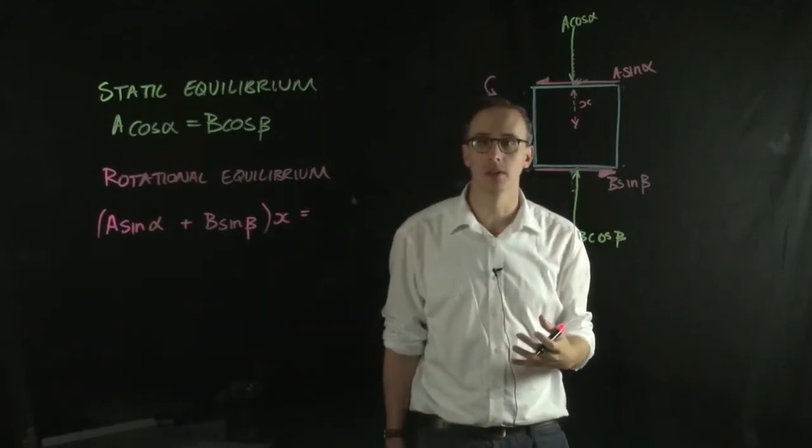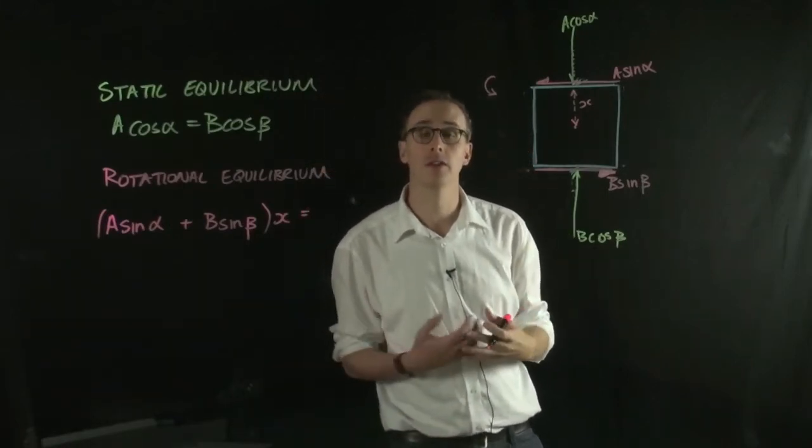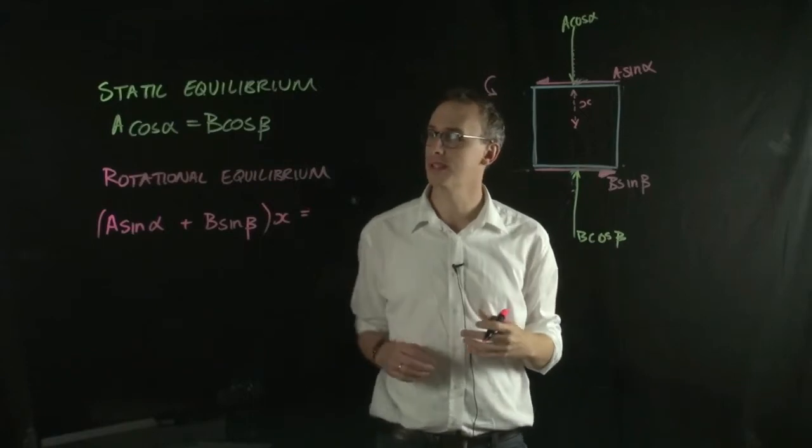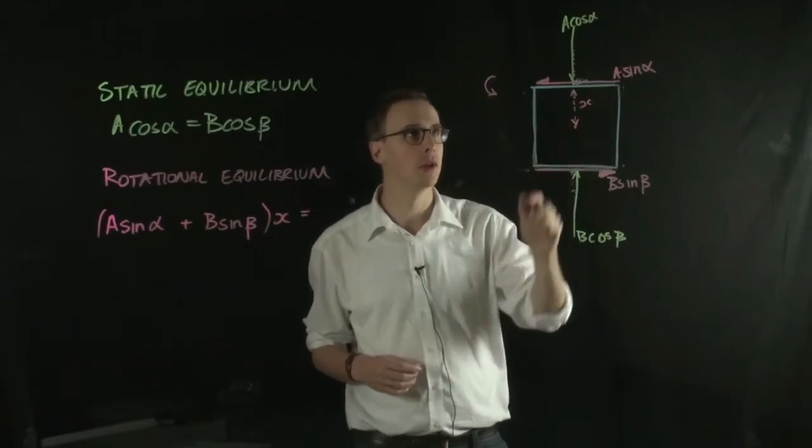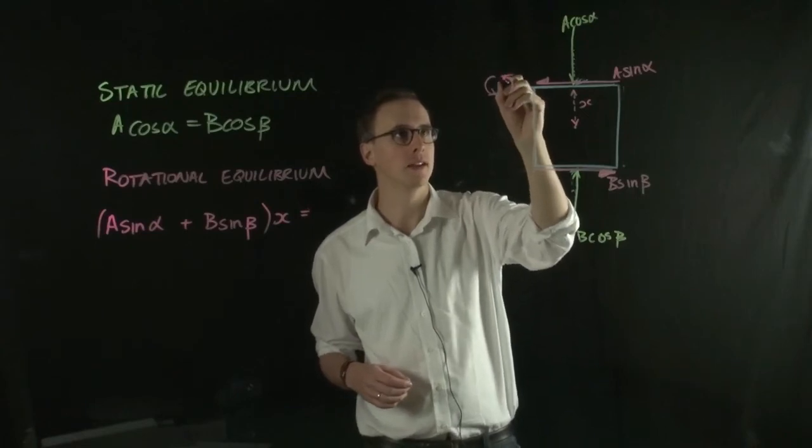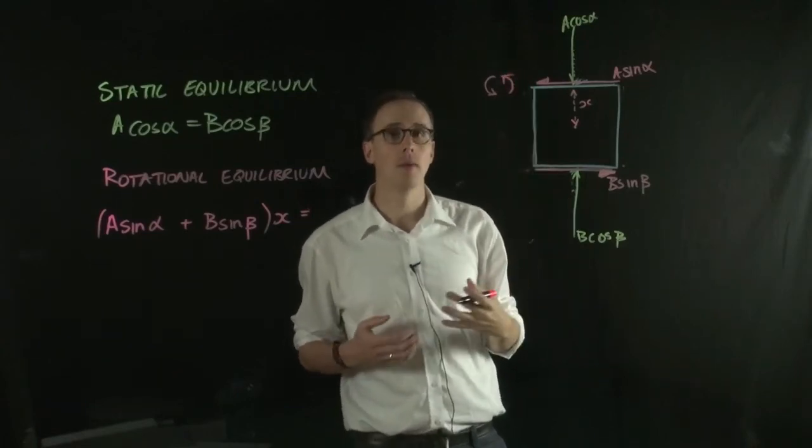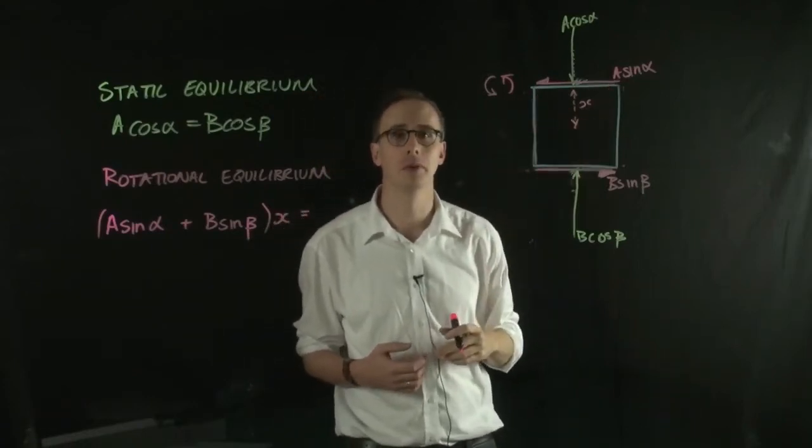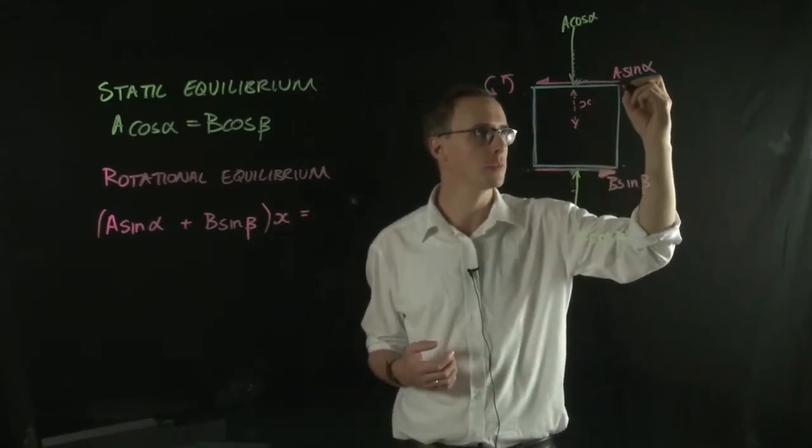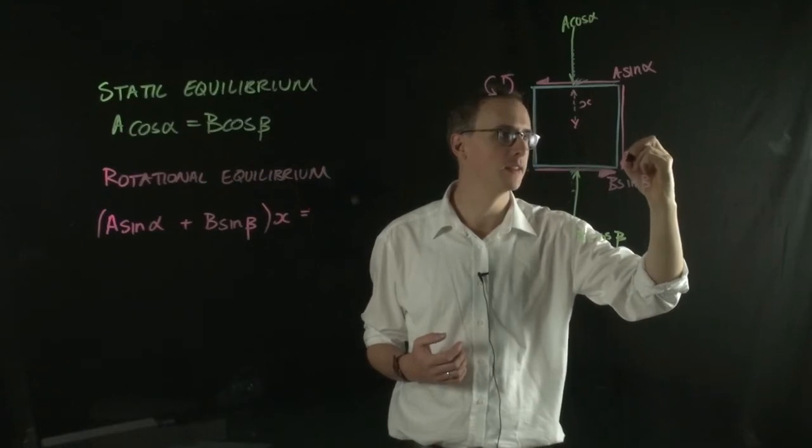Now those must be equal to, or there must be another force acting in an opposite direction if this material is in rotational equilibrium. So what forces are acting in this direction? Well, those must be shear forces acting on the two planes that don't have any normal force. So there must be two forces acting in these directions.